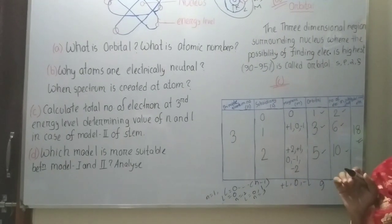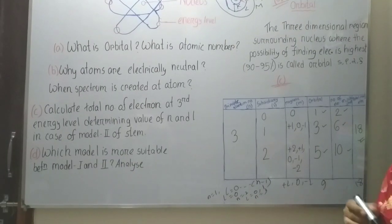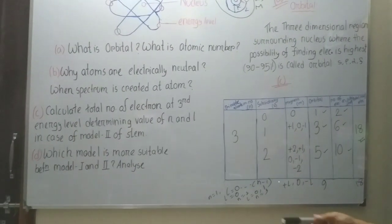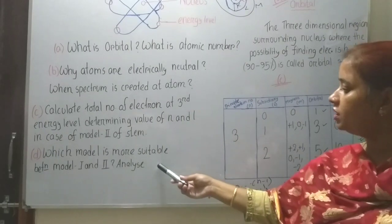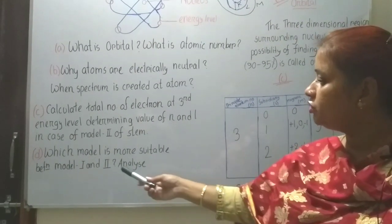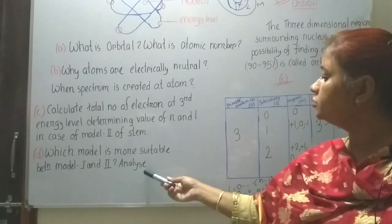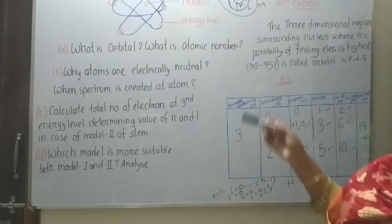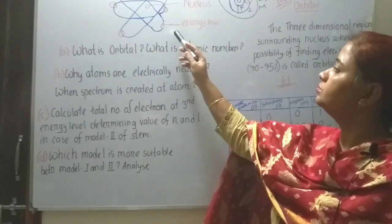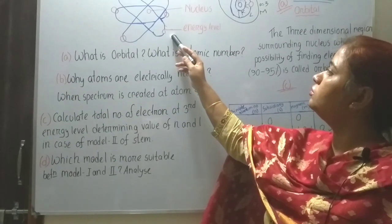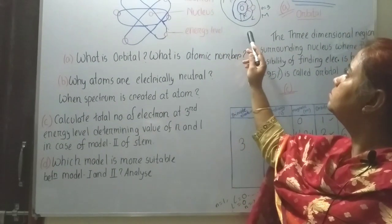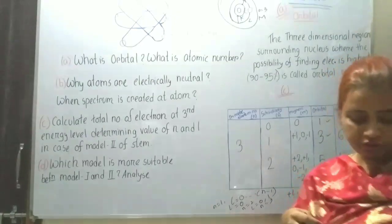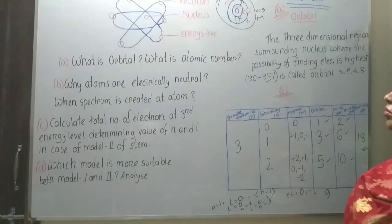Is this clear? Okay. Then come to question number D: Which model is more suitable between model 1 and model 2? Analyze. Model 1 is the Rutherford atom model, and model 2 is the Bohr atom model. You have to identify which one is Rutherford and which one is Bohr.